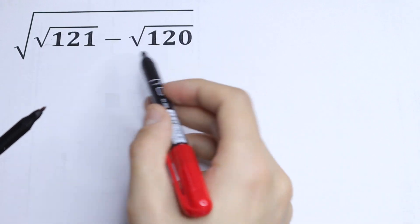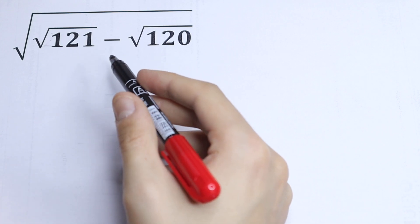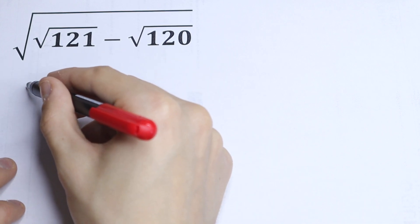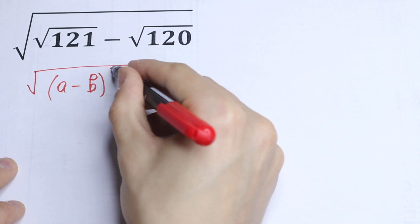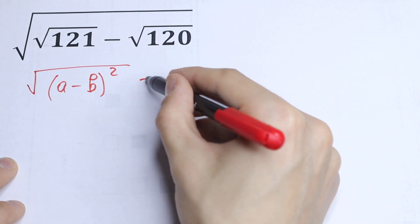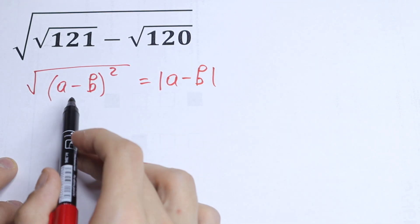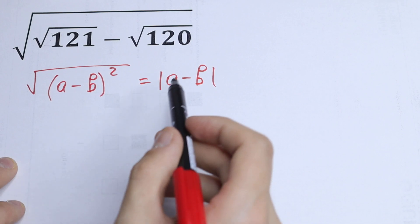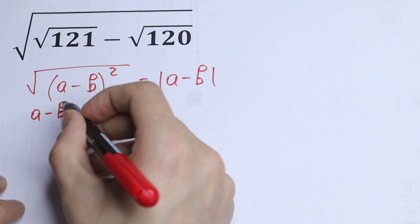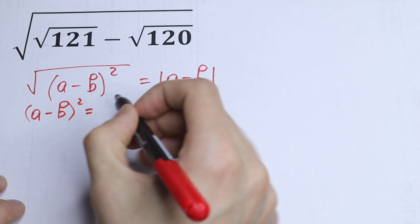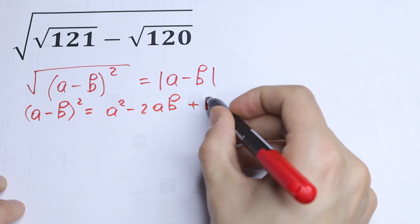The main idea to solve this kind of question with a square root is to create a formula inside the square root. So if we have, for example, the square root of (a minus b) squared, we can write it as the absolute value of (a minus b). So if we are able to create that formula right here, it will be a really good simplifying trick. We know that (a minus b) squared equals a squared minus 2ab plus b squared.